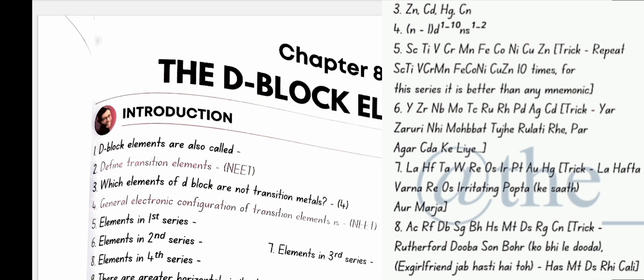General electronic configuration of transition elements are N-1, D 1-10, NS 1-2.